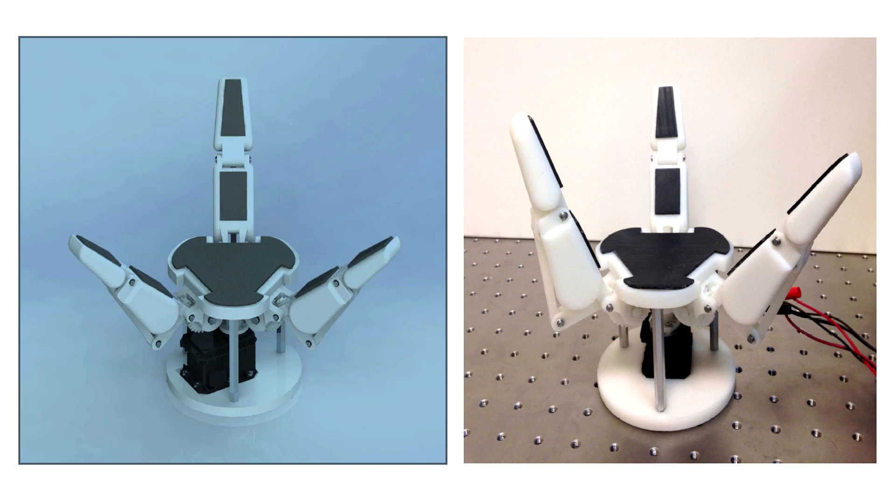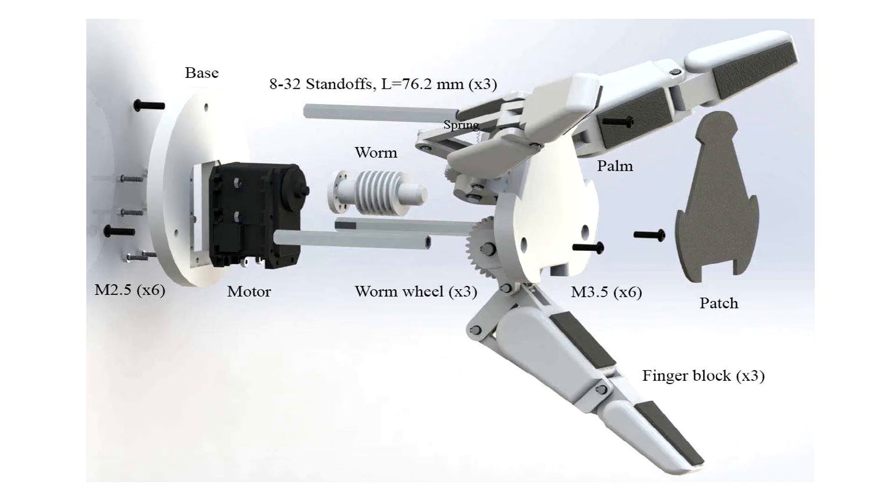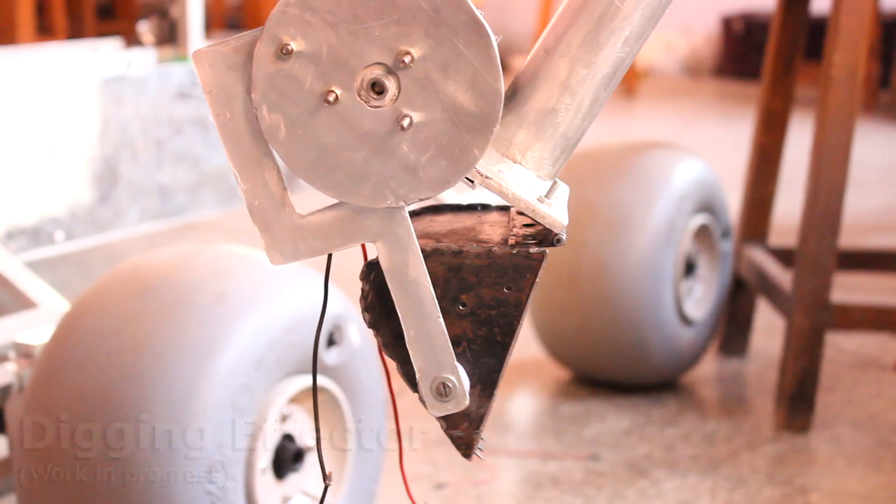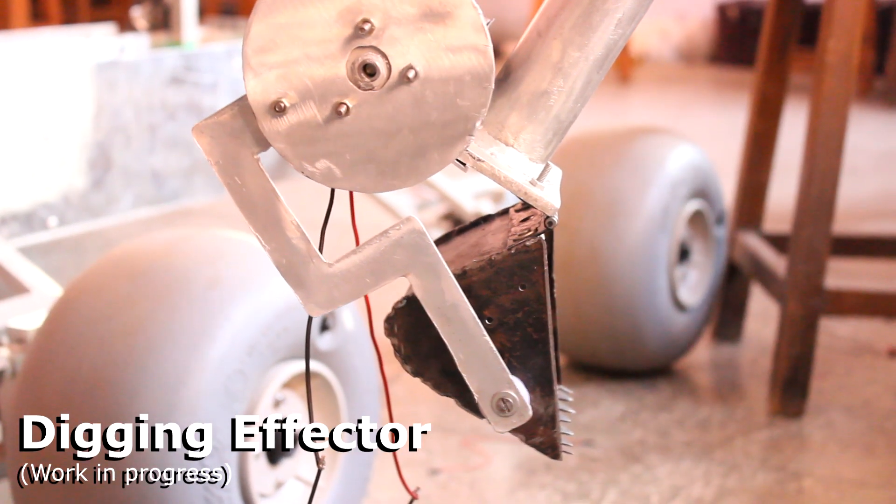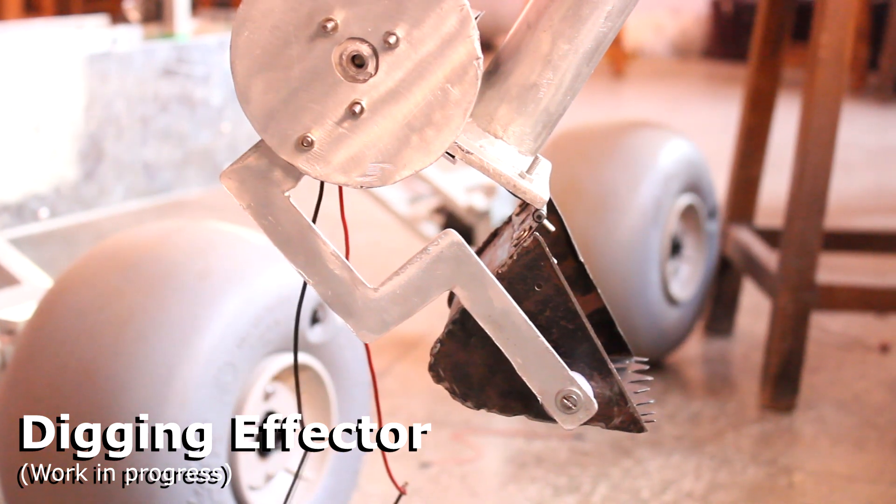A three-finger gripper, which the team is going to get 3D printed using an open-source design, will be used for the equipment servicing task. For the digging effector, a simple train wheel mechanism will be used to move the scoop.